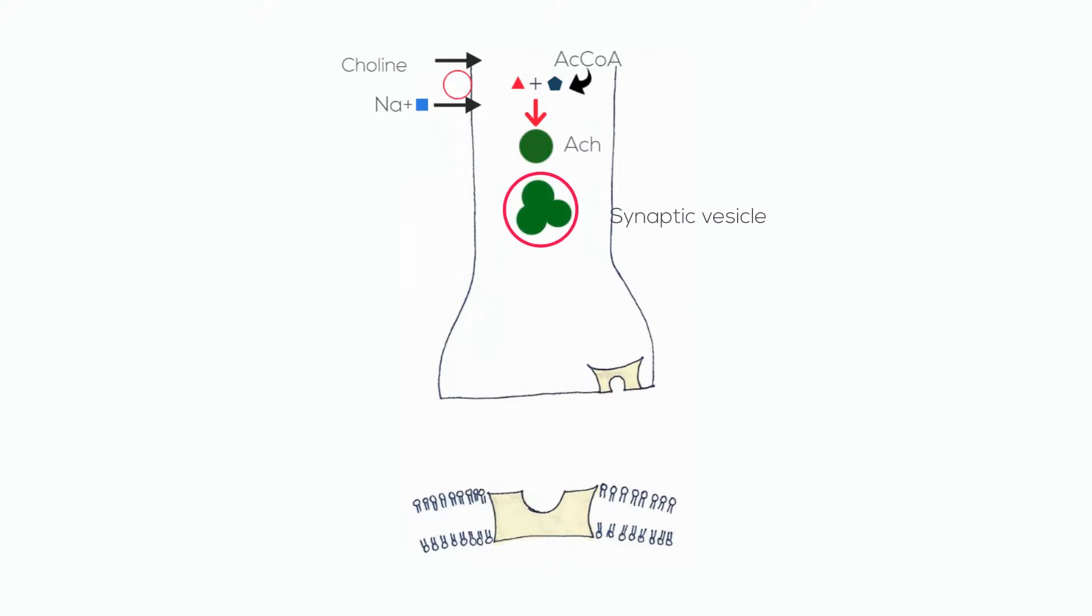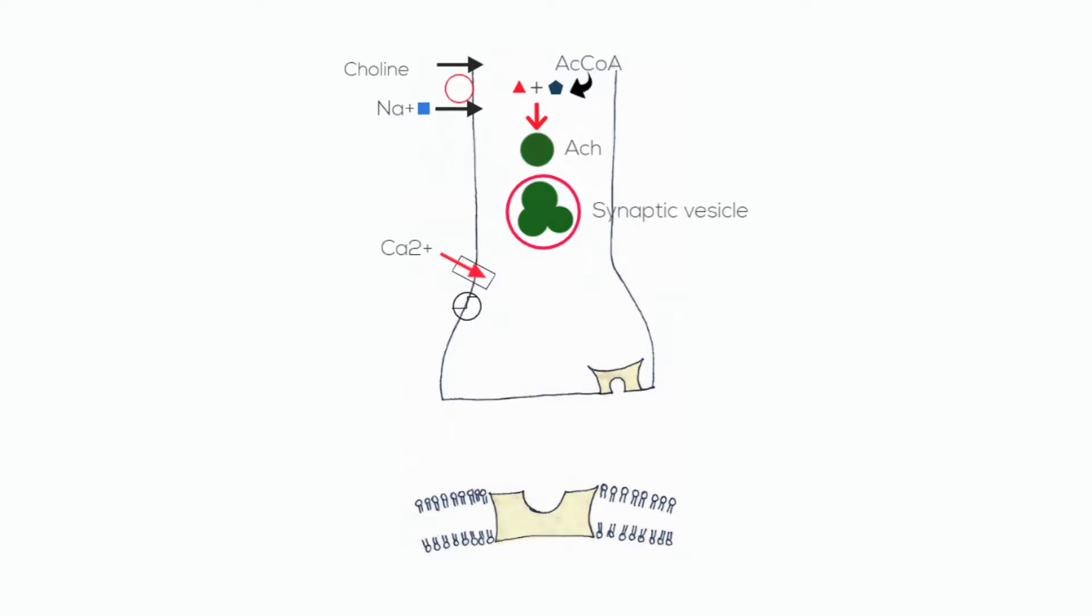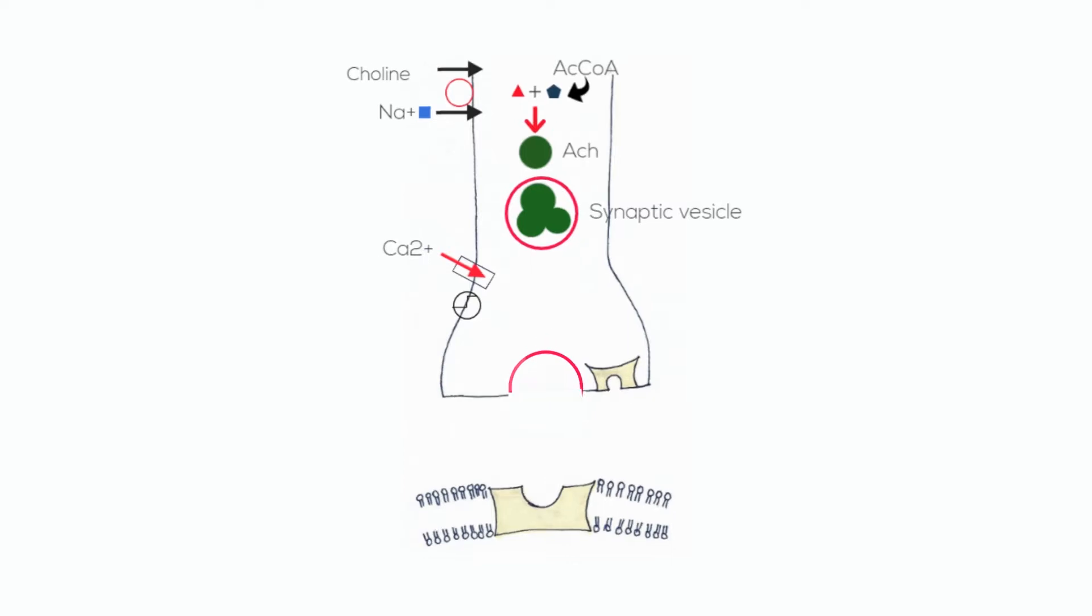Whenever there is a need to release acetylcholine, calcium ions move inside the cell through voltage-sensitive calcium channels that cause depolarization. Upon depolarization, acetylcholine is released into the synaptic cleft where it binds with postsynaptic receptors.